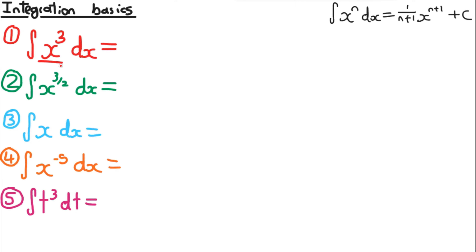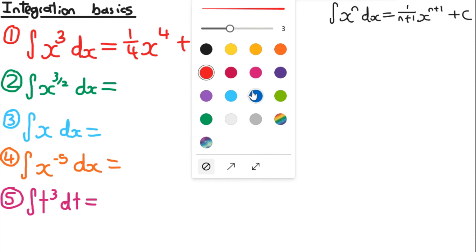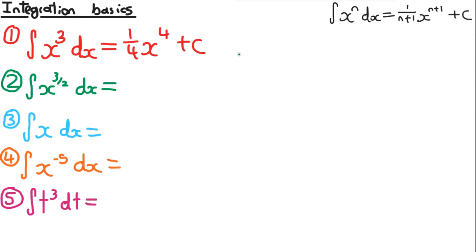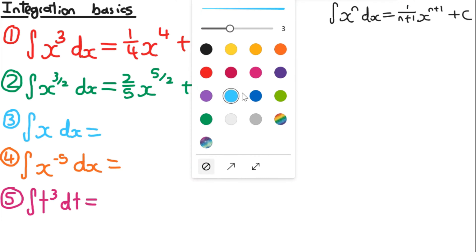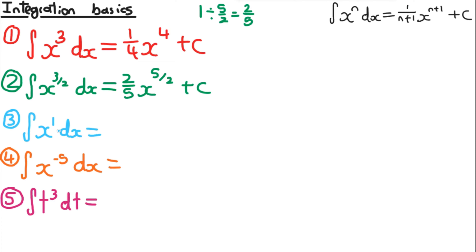Here are some more examples. For x³ (n=3): integral = (1/4)x⁴ + c. For x^(3/2) (n=3/2): n+1 = 5/2, and 1 divided by (5/2) flips to 2/5, giving (2/5)x^(5/2) + c. For x (which is x¹, so n=1): integral = (1/2)x² + c. Remember the plus c for all integrals.